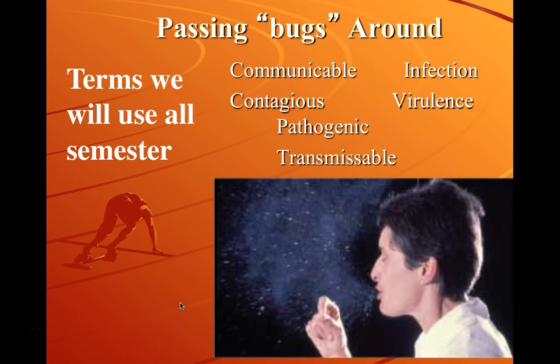An infection is an unwanted growth of a microorganism either in or on the human body. We have microorganisms growing in and on our body naturally, but an infection is the growth of an unwanted microorganism — essentially in the wrong place at the wrong time. 'Pathogenic' means disease-causing; an organism that can cause disease is a pathogen. Virulence is the severity of the signs and symptoms that the pathogen causes.